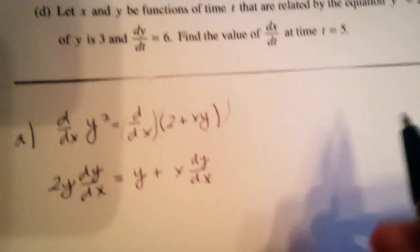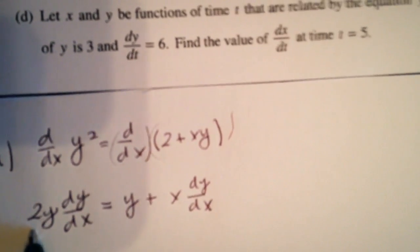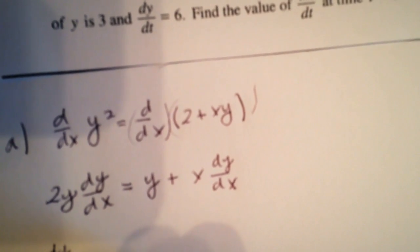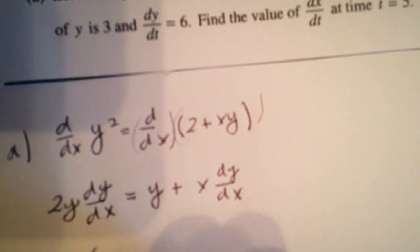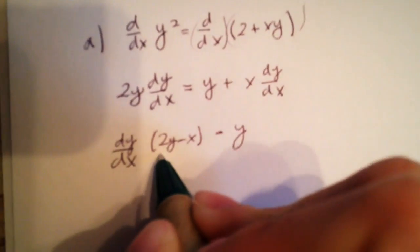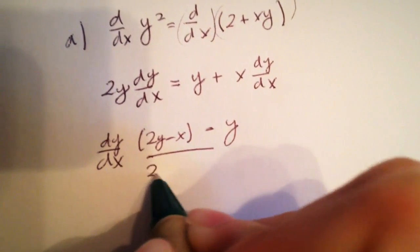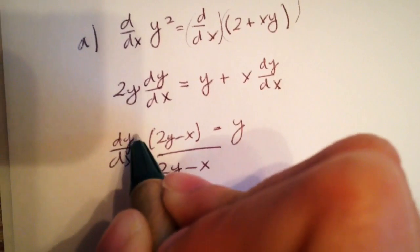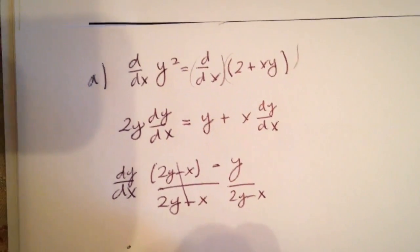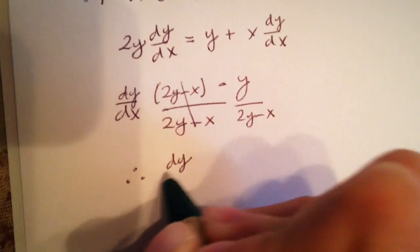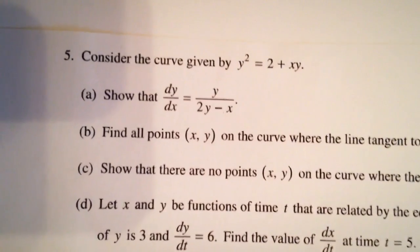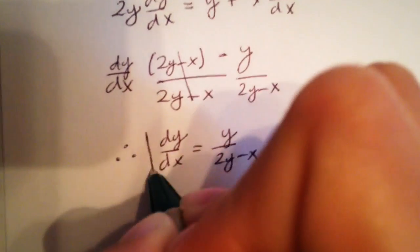With implicit differentiation, we gather all the terms to one side. We end up with dy/dx equal to 2y minus x over y, and then we divide through to isolate dy/dx. Therefore, we have proved that dy/dx equals y over 2y minus x, which is what part A was asking for.